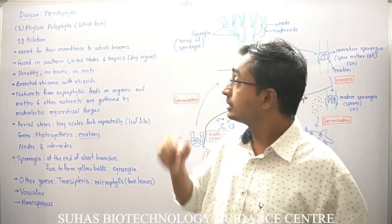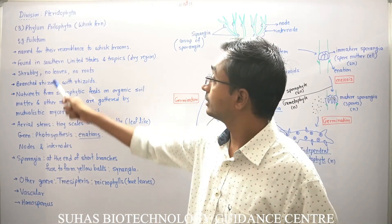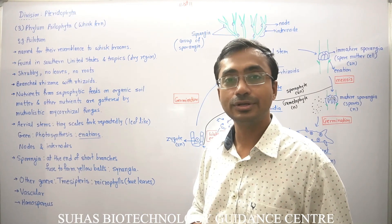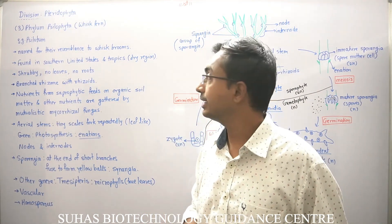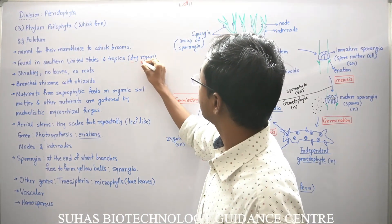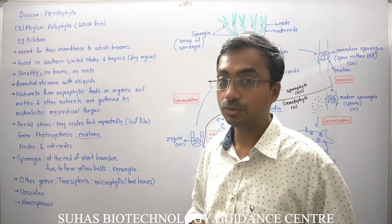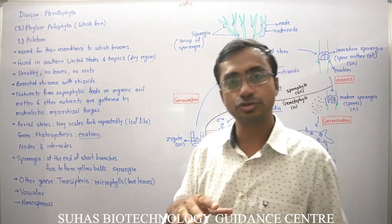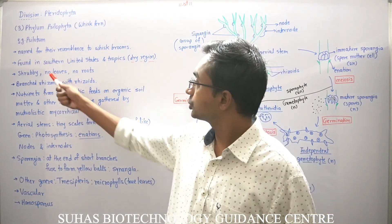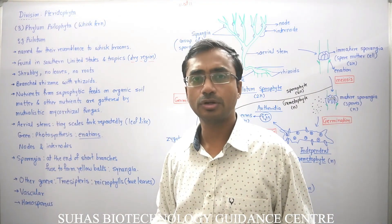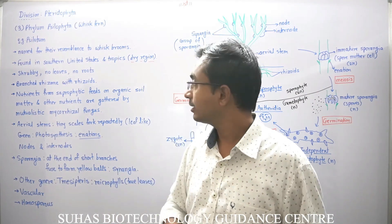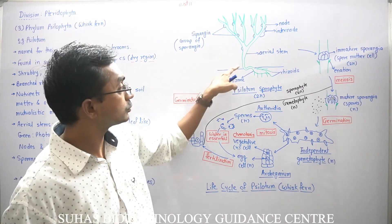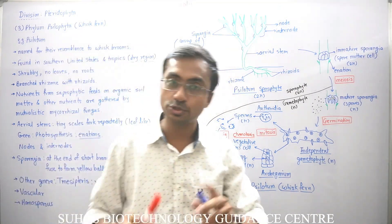Psilotum is found in the southern United States as well as in the tropical region — most of the regions in which it is found are dry regions, and it is also found in semi-arid zones. It is a shrubby plant, not a very small herb. No leaves are present, as you can see, but the whole plant is green, which is why it can perform photosynthesis.